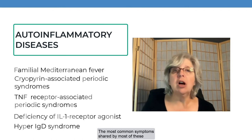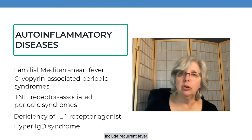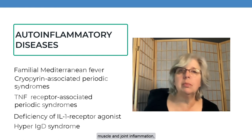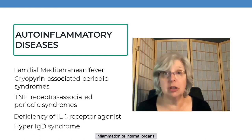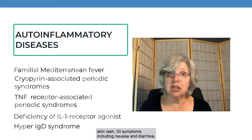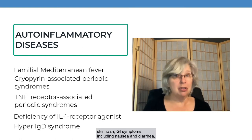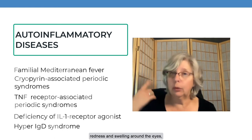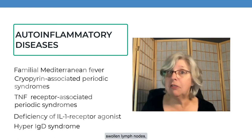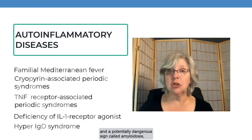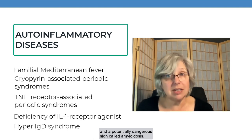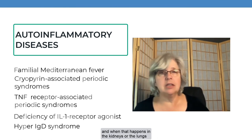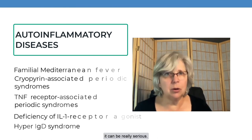The most common symptoms shared by most of these include recurrent fever, plus any combination of chills, muscle and joint inflammation, inflammation of internal organs, skin rash, GI symptoms including nausea and diarrhea, mouth or genital sores, redness and swelling around the eyes, swollen lymph nodes, and a potentially dangerous sign called amyloidosis — which involves the buildup of certain proteins in the tissues. When that happens in the kidneys or the lungs, it can be really serious.